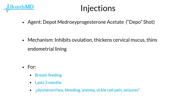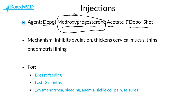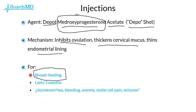One injection commonly seen on examinations is the depot medroxyprogesterone acetate injection, also known as the depo shot. Because it contains medroxyprogesterone, it works via a progesterone-mediated mechanism — inhibiting ovulation, thickening cervical mucus, and thinning the endometrial lining. The depo shot is therefore extremely similar to our progesterone-only mini pill and has many of the same advantages, especially that it can be used safely in patients who are breastfeeding, as it does not contain any estrogen.